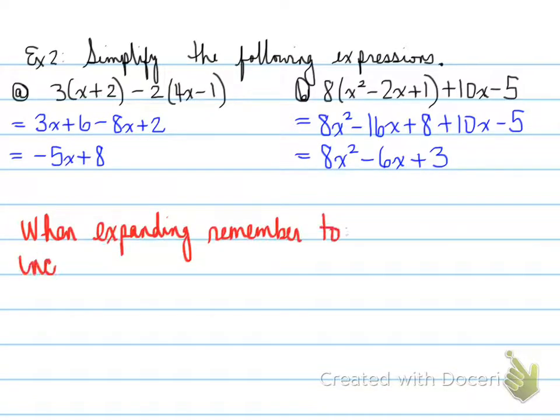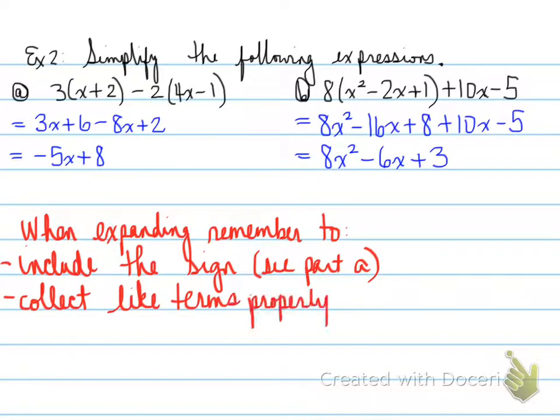So when expanding, remember to include the sign. So include the sign. See part A. So this is the sign that we're talking about here. And collect like terms properly. See part B. And what I mean by that is that x squared can only be combined with other x squareds. It cannot be combined with things like x. So to keep that in mind when you're combining like terms.